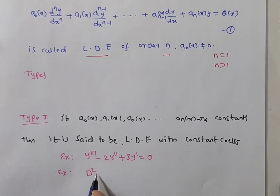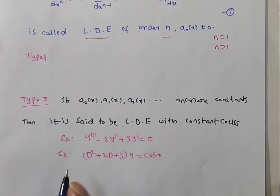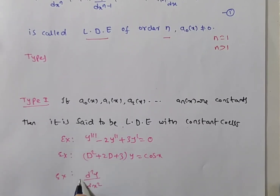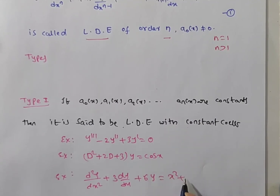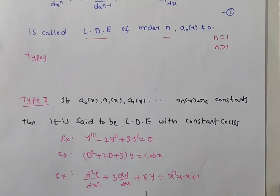Another example: (D² + 2D + 3)y = cos x is also a linear differential equation with constant coefficients. One more example: d²y/dx² + 3 dy/dx + 6y = x² + x + 1. Here the coefficient of y is 6, coefficient of dy/dx is 3, and coefficient of d²y/dx² is 1 — all constants.